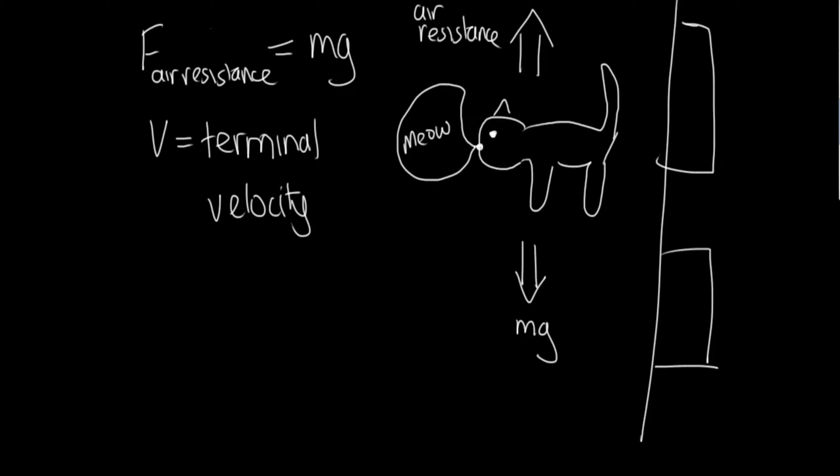And no matter how long the cat falls for, its velocity won't get greater than this terminal velocity. So they actually did a study of all the cats that had fallen out of their apartments in New York. And they found that the highest mortality rate for the cats was for cats which had fallen from the seventh floor. So the belief was that cats will reach their terminal velocity when they've fallen seven floors.